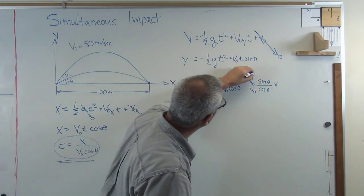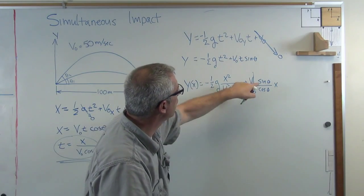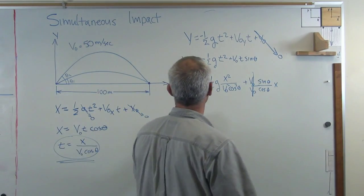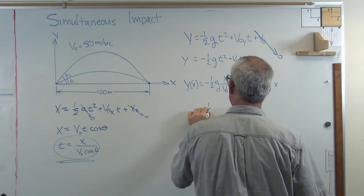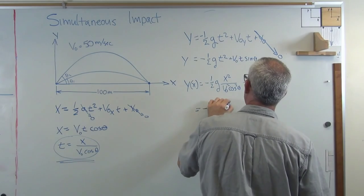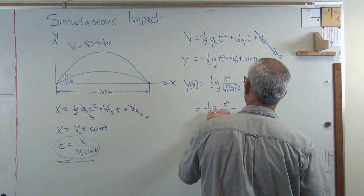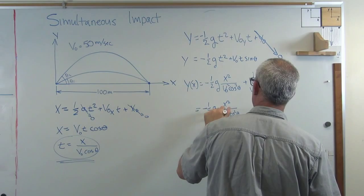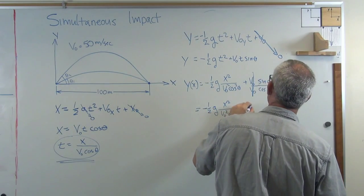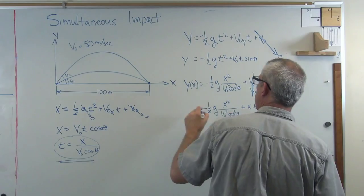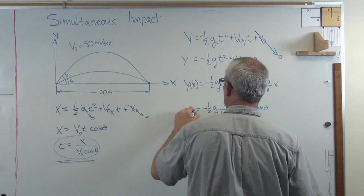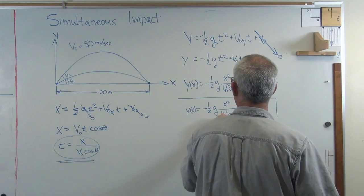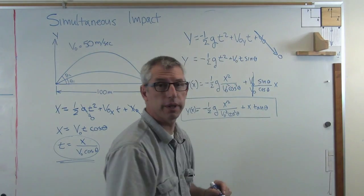Now, I get to cross that out because those two are the same thing. And sine theta over cosine theta is tangent theta. So I'm going to make one more simplification here. -½gx²/(v₀² cosine² theta) plus x tangent theta. And that's y as a function of x. So here's the expression I need. This is what's going to make this work.